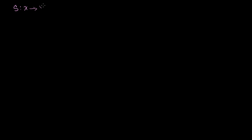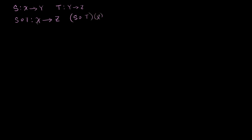We know that if we have some linear transformation S, that's a transformation from X to Y — these are just sets of vectors — and T is a linear transformation from Y to Z, then we can construct a composition of S with T that is a linear transformation from X all the way to Z. The definition of the composition of our linear transformations: the composition of S with T, applied to some vector x in our domain, is equal to S of T of x.